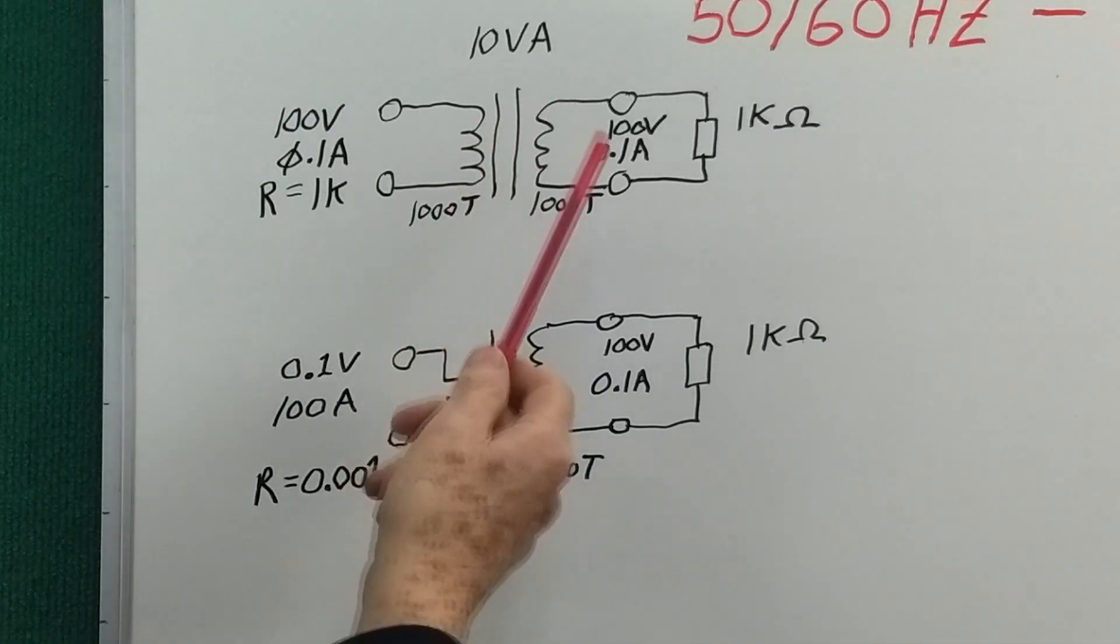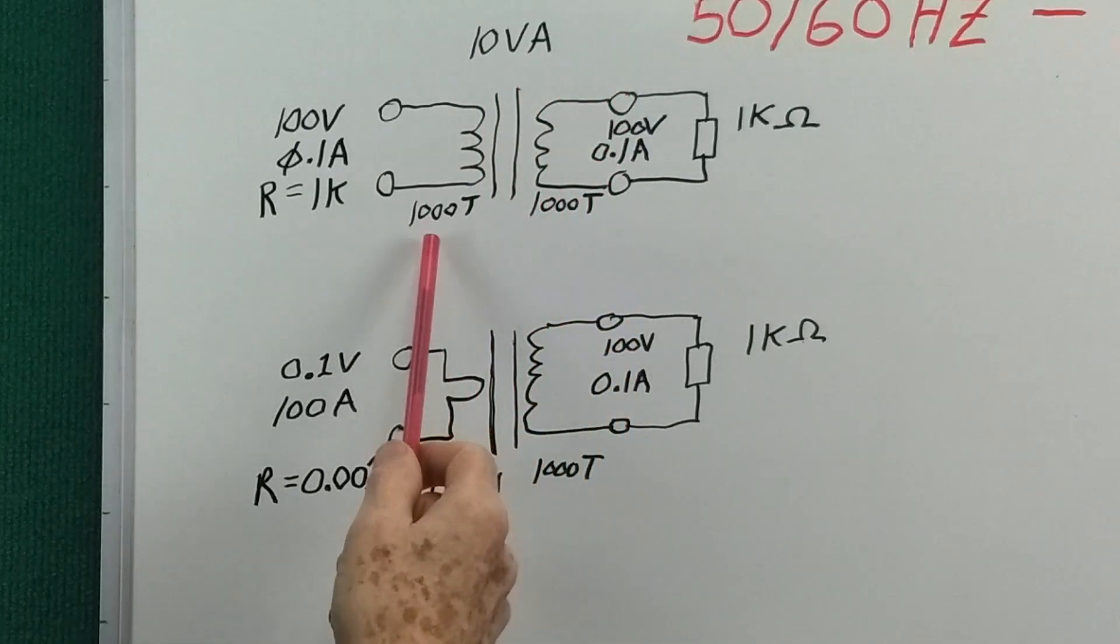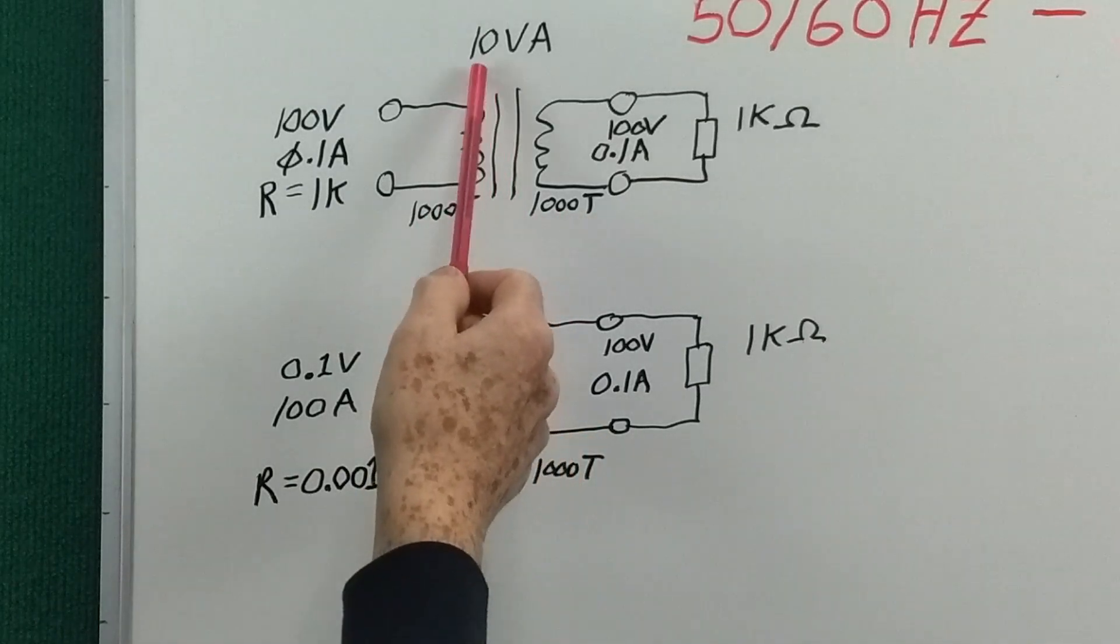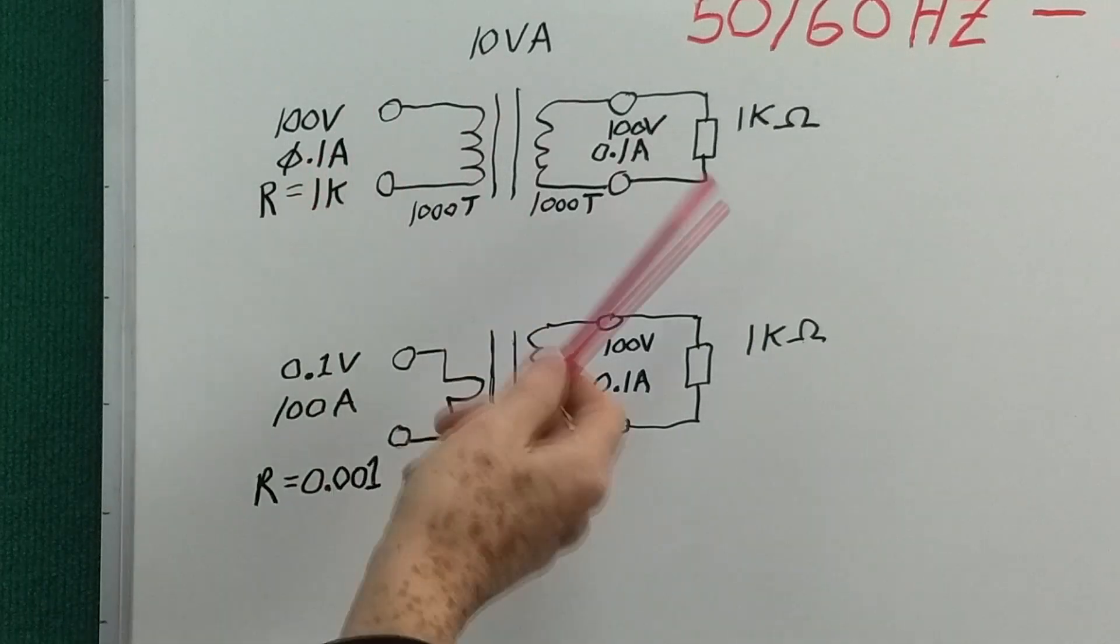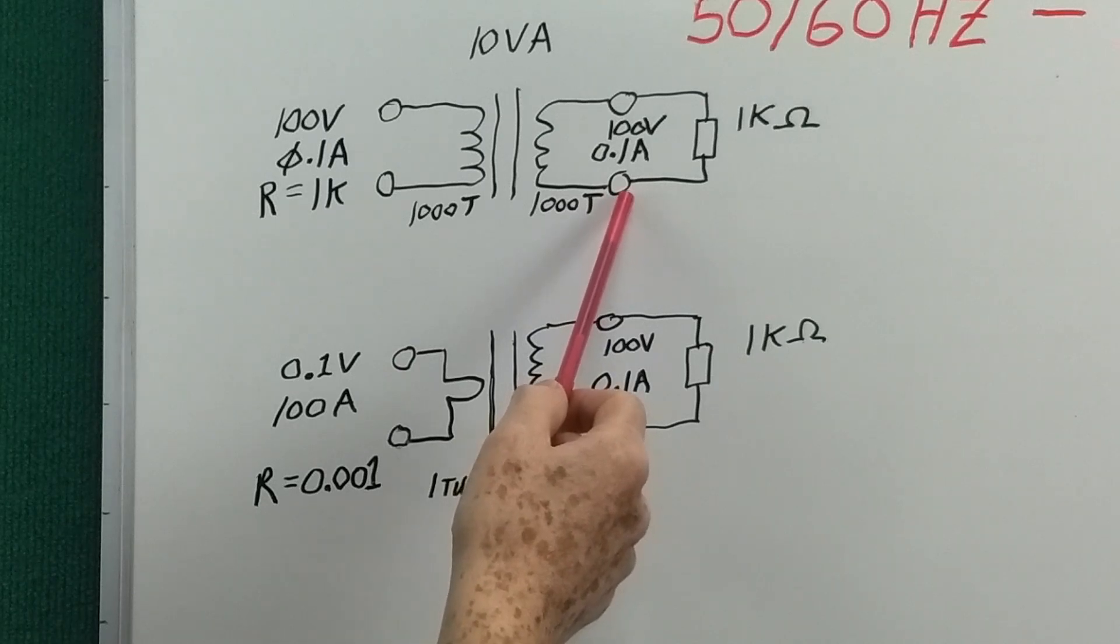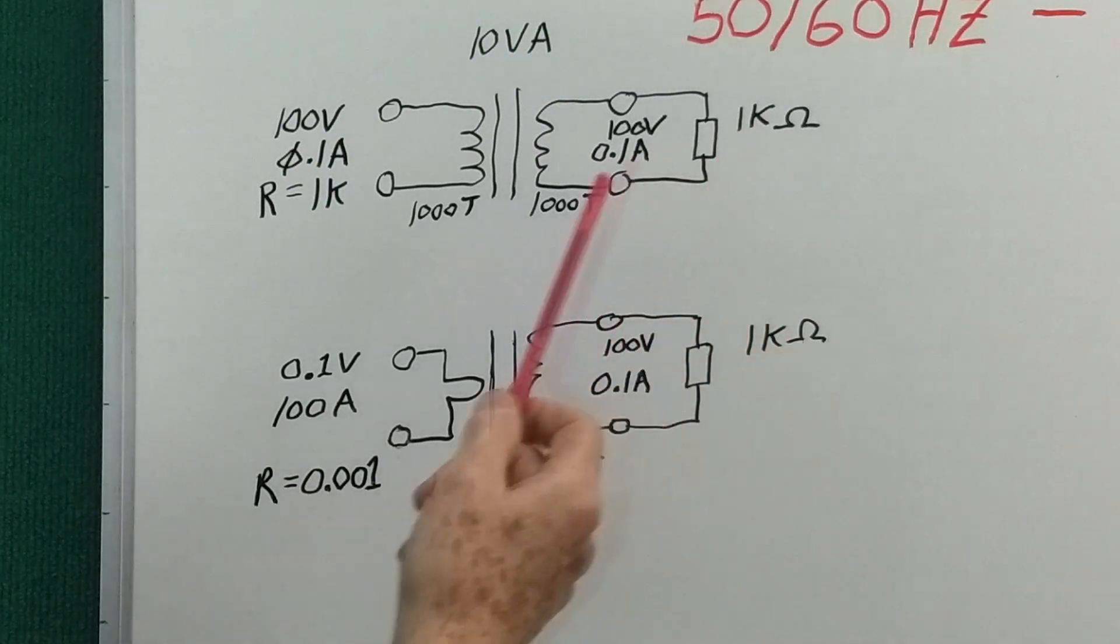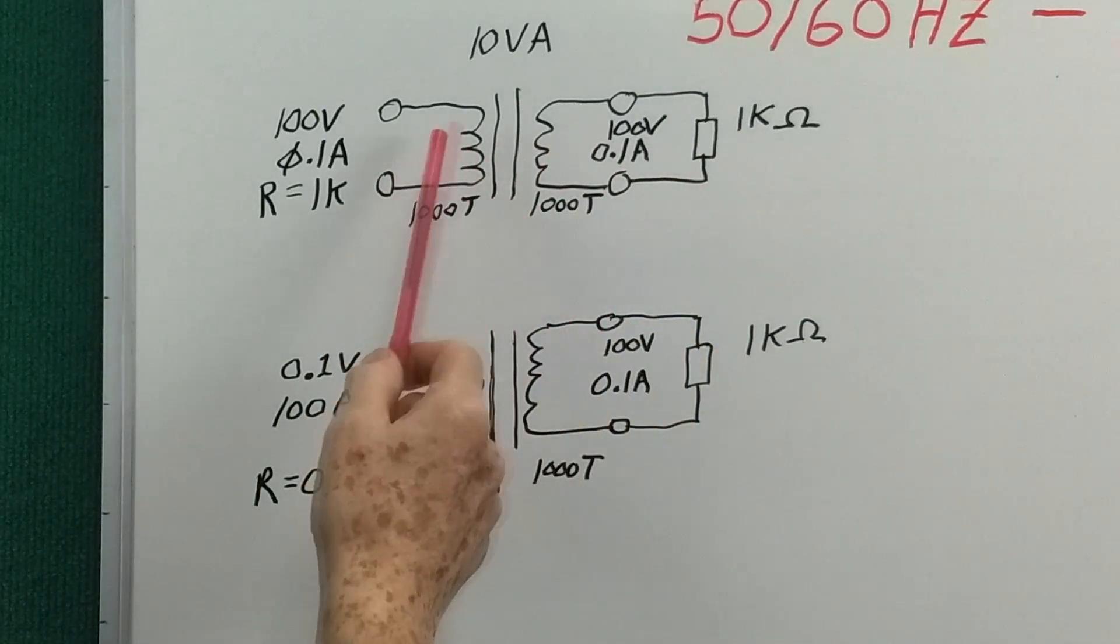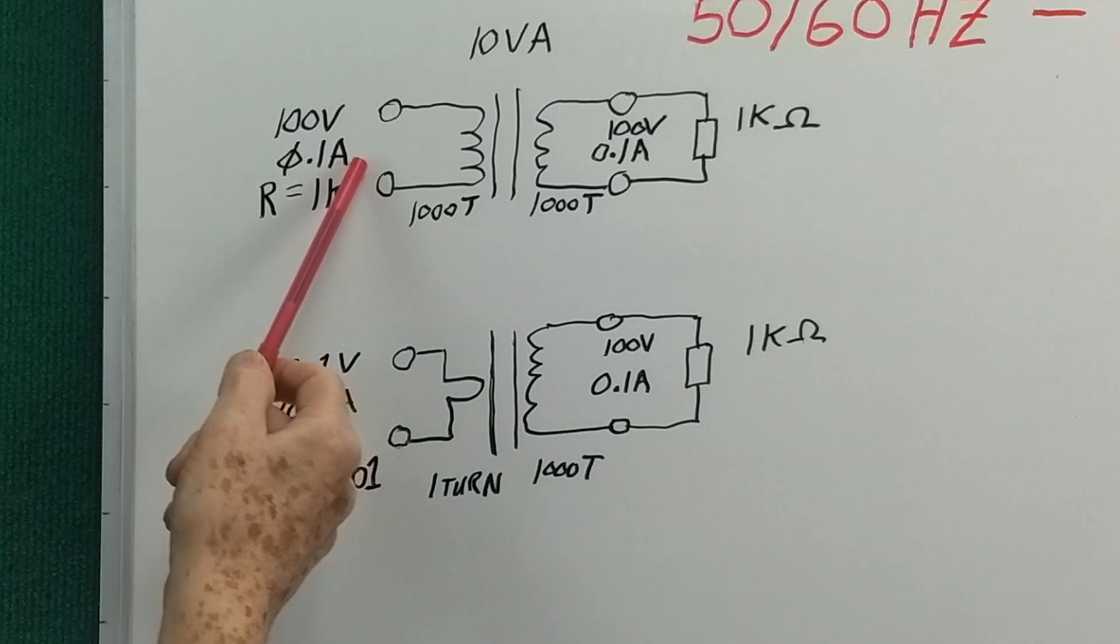Okay, here we have a normal transformer, and in this case let's say it has a rating of 10 volt-amps, and let's assume there's 1000 turns on the primary and 1000 turns on the secondary. So for 10 volt-amps, if we apply 100 volts to the primary at full load, we'll get a tenth of an amp. So out here we have a hundred volts on the secondary, and to get 0.1 amps we would need a load of 1000 ohms. And the primary, looking into the primary of the transformer, we would see that 1k because the turns ratio is 1 to 1. So here R equals 100 volts divided by 0.1 amps, which is 1k.